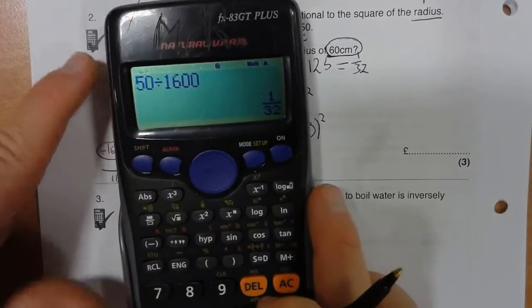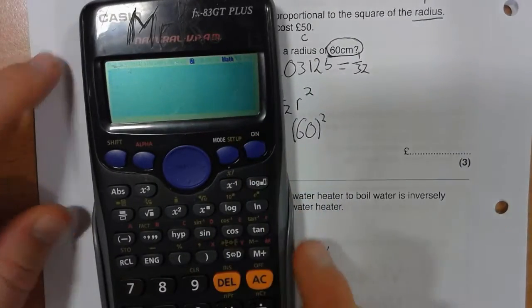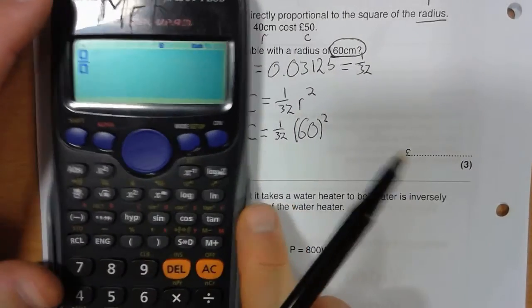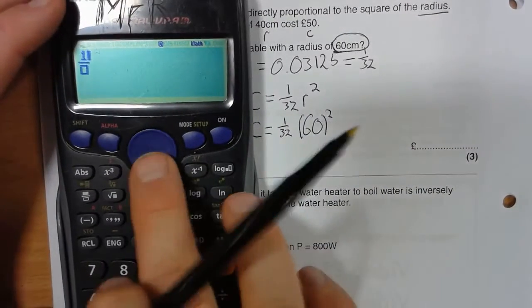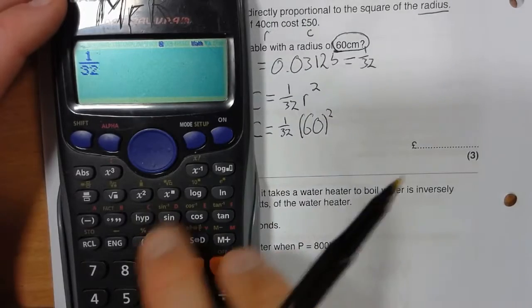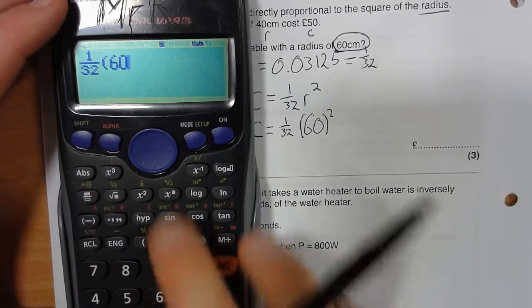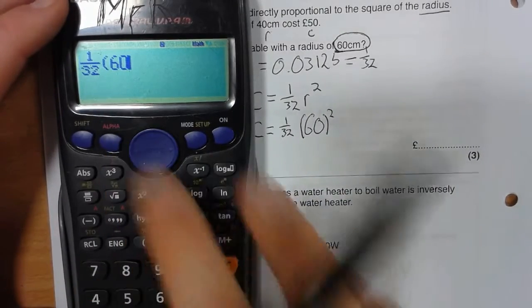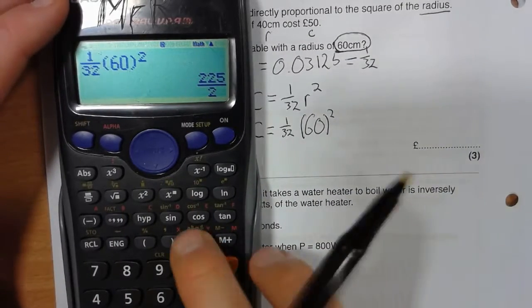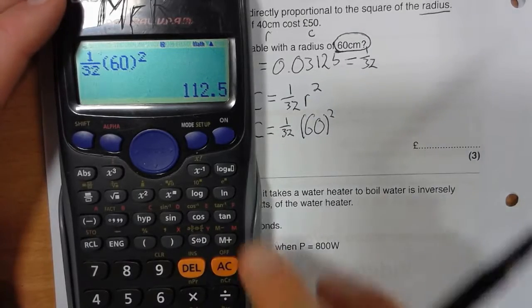You could set that all into your calculator. Just as a little thing about how to do that, that's my fraction button. I could just write it just like that. 1/32nd times by 60 squared equals 225 over 2 or 112.5.